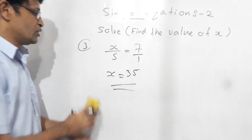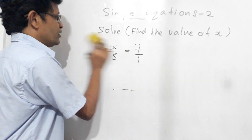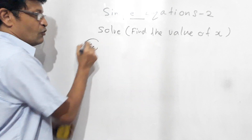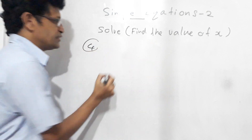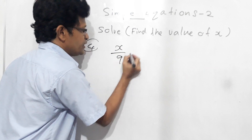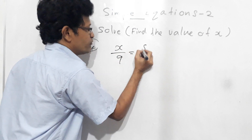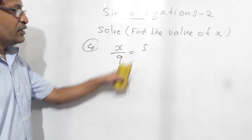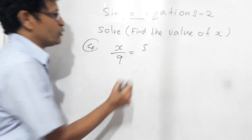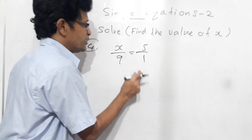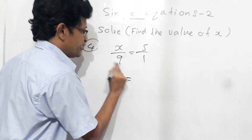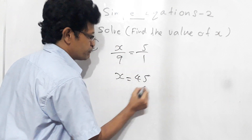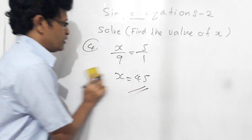Now we will do the fourth question: x over 9 equals 5. We can do cross multiplication because 5 means 5 over 1. So 1 into x gives x, equals 9 times 5, which is 45. So x equals 45.